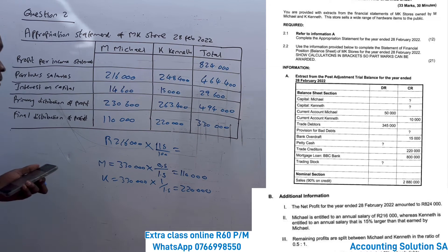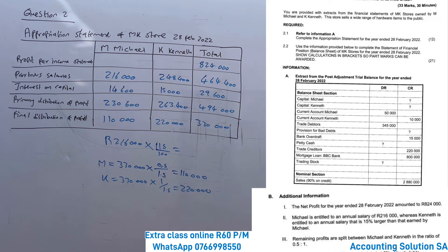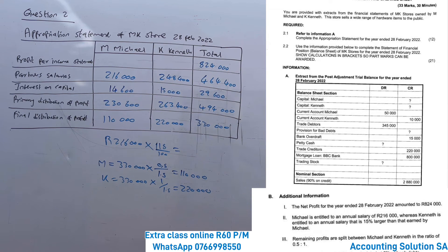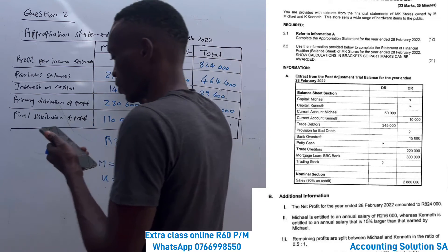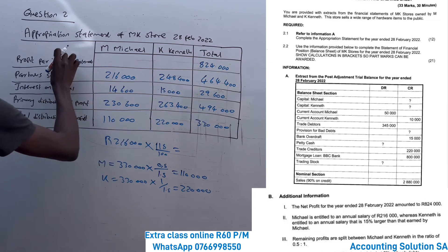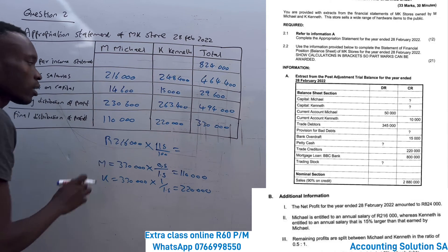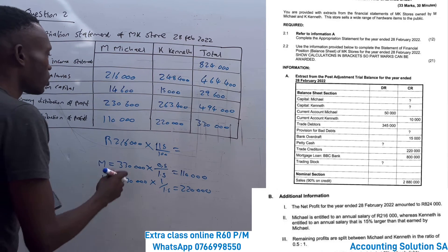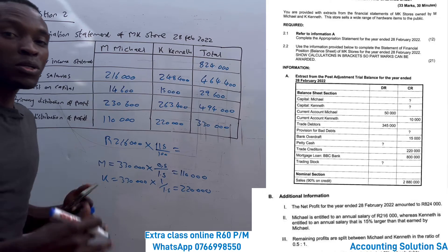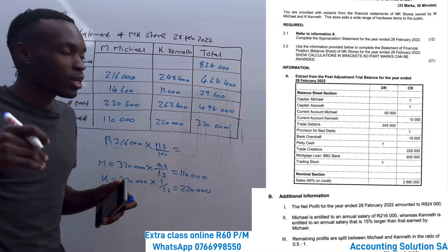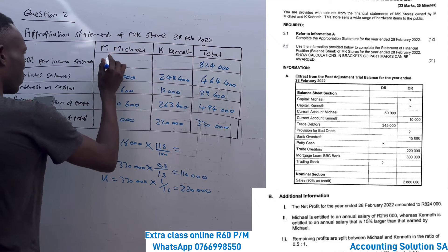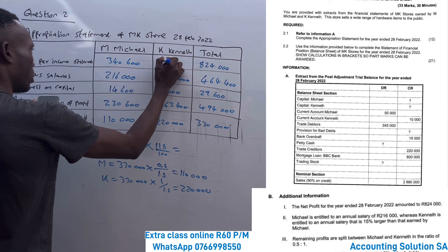Now the last step — you add the primary distribution and final distribution for each partner to get the total profit share. For Mitchell: R230,600 plus R110,000 equals R340,600. For Kenneth: R263,400 plus R220,000 equals R483,400. The difference between the appropriation statement and a current account is that here we calculate the profit allocation in a step-by-step way to show that you understand the process.